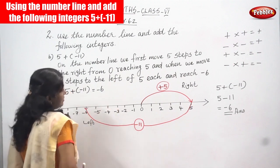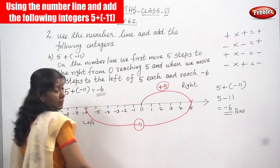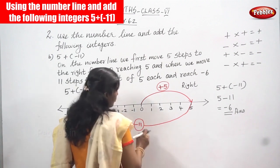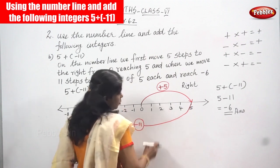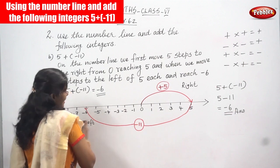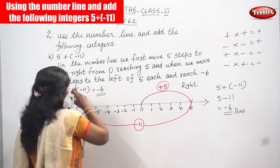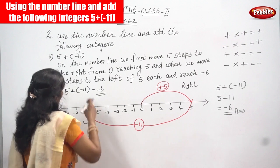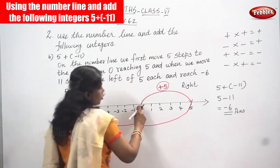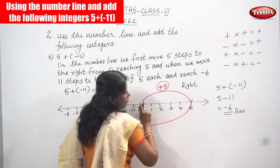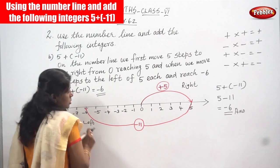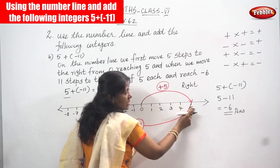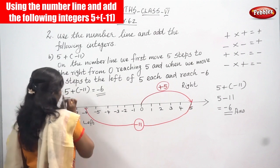Minus 6 is the right answer. Now we are using the number line. First, you draw the number line — on the right side write the positive integers, on the left side write the negative integers. The first step on the number line: from zero, move five steps to the right, reaching 5. Because the first number in the question is 5, you start from zero and move five steps to reach 5.